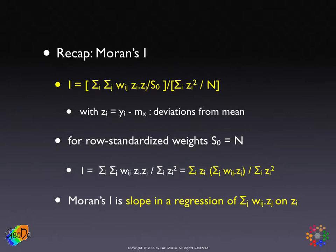If we reshuffle this a little bit, we can move the sum over i out, which pertains to zi, and the sum over j doesn't affect zi, so we can bracket that and think of this as two different terms — analogous to a bivariate regression coefficient, where the numerator is xy and the denominator is x squared.